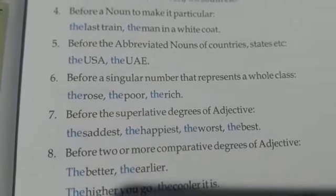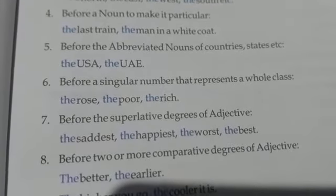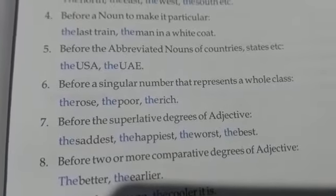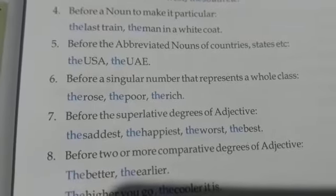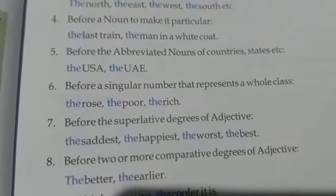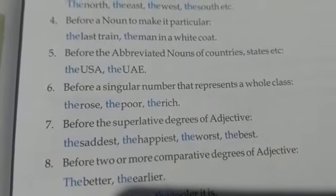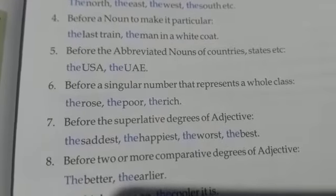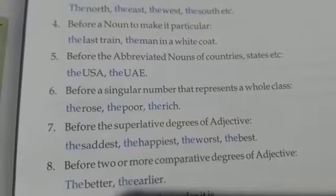Before the singular number that represents a whole class or the whole category. 'The rose' means not any particular rose — we are talking about the whole rose category. 'The poor' means all the poor people of the world; 'the rich' means all the rich people of the world. For that also we have to use 'the' before it.